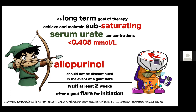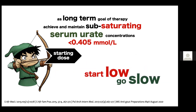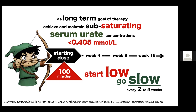Wait two weeks following the flare before starting allopurinol. The principle is start low and go slow — begin at 100mg. Increase at week four and week eight: every four weeks for patients with impaired kidney function, or every two weeks for patients with normal kidney function. How often do we prescribe allopurinol and then forget to titrate?